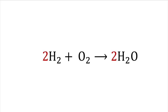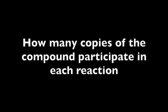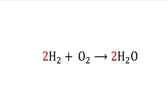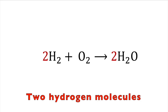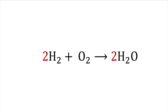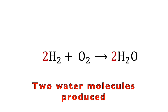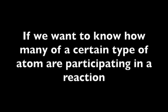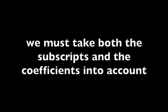In a chemical equation, you will often see numbers in front of a chemical formula. These numbers are called coefficients, and they tell us how many copies of the compound participate in each reaction. For example, here is an equation for the synthesis of water: two hydrogen molecules plus one molecule of oxygen reacts to yield two molecules of H2O, or water. To know how many of a certain type of atom are participating in a reaction, you must take both the subscripts and the coefficients into account.